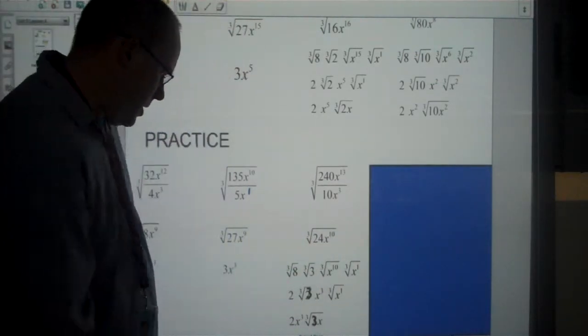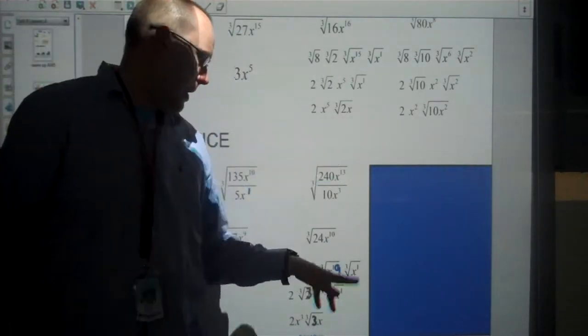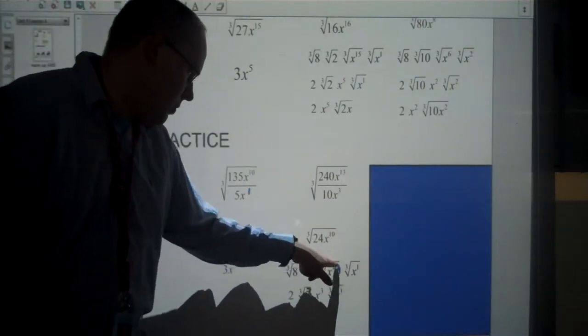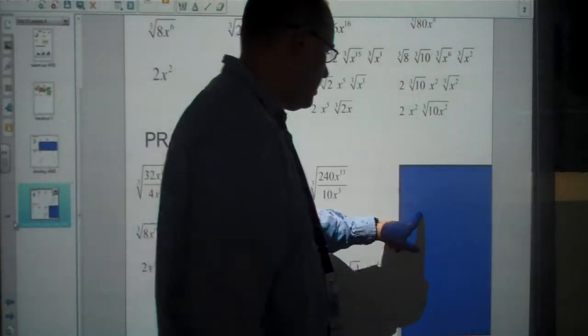So, whoops, there's a mistake here. That's supposed to say x to the 9. So, 3, 6, 9. And then 9 plus 1 gives us our 10. And then the cube root of x to the 9 is x to the 3. And then once again we reorder at the end of the question.